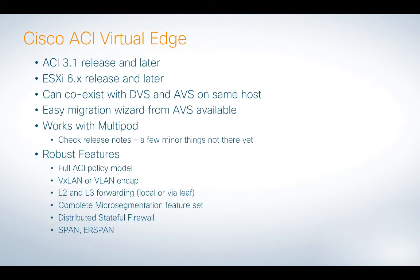There are a couple of things you should be aware of in terms of versions and dependencies. We need to be running ACI 3.1. In terms of your VMware environment, you should be running ESX 6 or later — 6.0, 6.5 — and anything going forward, because we're no longer dependent on having kernel access with AVE.